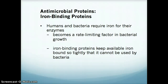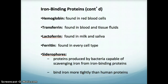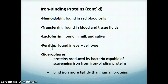We also have antimicrobial proteins that are iron binding proteins. Both humans and bacteria require iron for enzymes — there's often a metal cofactor needed for a functioning enzyme. If we can bind iron, it becomes a rate-limiting factor in bacterial growth, since bacteria can't grow if they can't access iron for their enzymes. The iron binding proteins we produce keep iron unavailable to bacteria, slowing their growth. Examples include hemoglobin in red blood cells, transferrin in blood and tissue fluids, lactoferrin in milk and saliva, and ferritin found in every cell type.